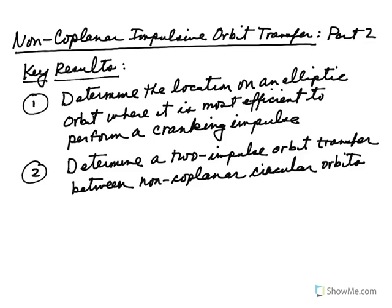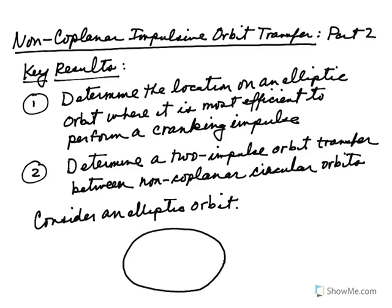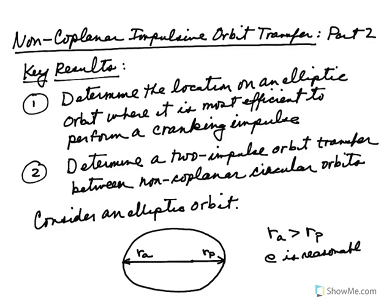Let's determine the location on an elliptic orbit where it is most efficient to perform a cranking impulse. Consider an elliptic orbit: clearly, if it has any significant eccentricity, it has a much larger apoapsis radius than periapsis radius. So R_A is bigger than R_P, and if eccentricity E is reasonably large, then R_A will generally be much, much bigger than R_P.